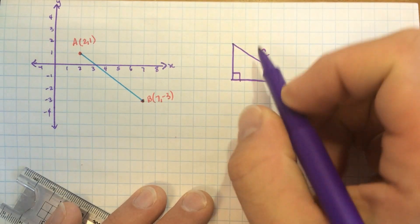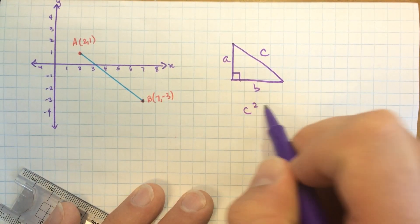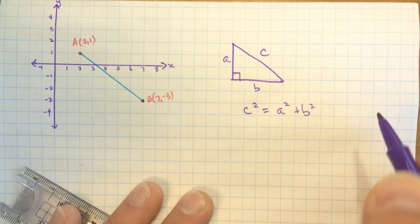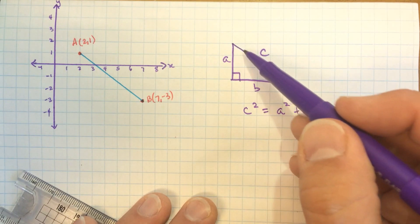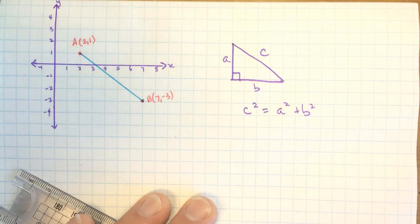And so often we would label it like this. This is side C, and we know the lengths of sides A and B. And so we end up with a formula, something like this. C squared equals A squared plus B squared. So if we needed to find the length of this side, we could use the other two sides to make a calculation to find that.